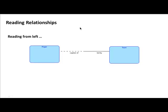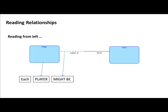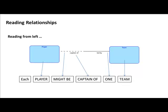Reading from the left, we always start the sentence with 'each', then put the name of the entity type. So: 'each player' — then we see a dashed line, so we say 'might be'. Then we encounter the name of the relationship — 'captain of' — and then we skip to the cardinality notation. Since there is no crowfoot, we say 'one', then the entity type name. A computer could mechanically construct an English-like sentence from the diagram.